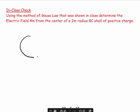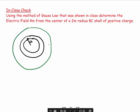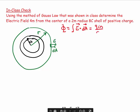Here we have a shell of charge — that's our A. Around it we have a point of interest, which is where my Gaussian surface goes through, and we'll call that R. For this point of interest, E is parallel to dA. We state Gauss's law: the flux is equal to the integral of E dotted with dA — they are vectors — which equals Q_inside over epsilon naught.